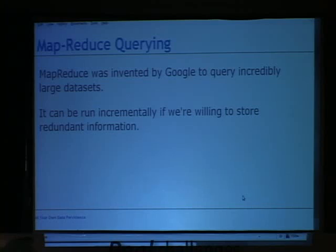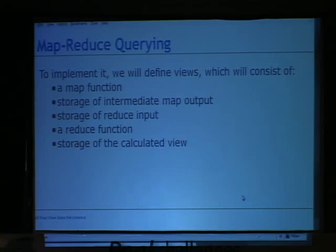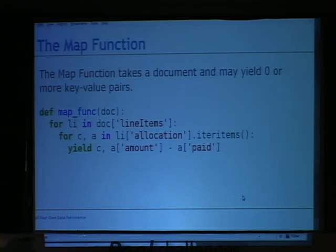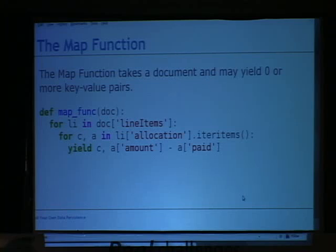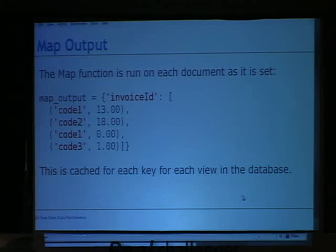MapReduce can be run incrementally if we're willing to store redundant information. We're already writing our own database and making compromises, so why not store excess data and query really quickly? To do MapReduce querying you need a map function, storage of intermediate map output, a reduce function, and then we store the calculated view — updated whenever we set or delete an item. Here's an example map function: it goes through line items and gets the accounting code and the AR amount — accounts receivable is the amount of the accounting code minus how much has been paid.